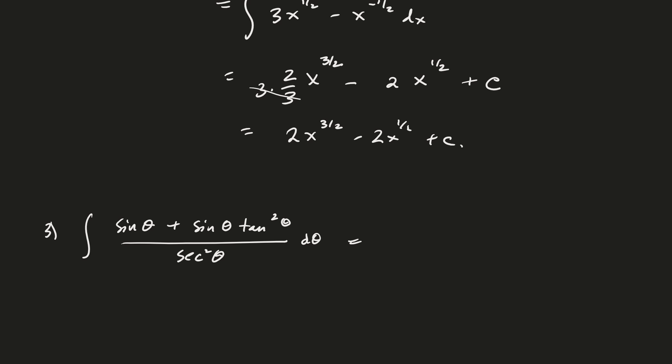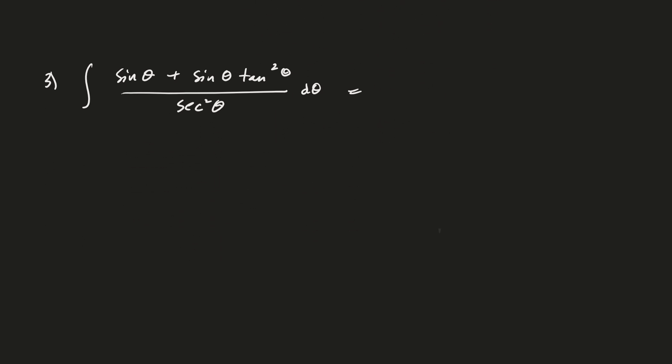Before we get started with the new material, let's go ahead and try another antiderivative. So here we have the sine of theta plus the sine of theta times tangent squared divided by secant squared. So how are we going to deal with this? We need to deal with the integrand first. This is the integrand.